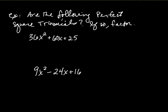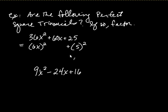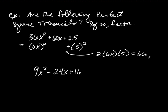First of all, are the following perfect square trinomials, and if so, factor? I recognize there's hope here because I have a perfect square on each end. What squared gives 36x squared? That's going to be 6x, squared. And what squared gives 25? That's going to be 5. The middle should be 2 times 6x times 5. And what's that equal to? Well, 2 times 5 is 10, times 6 is 60x. Indeed, I have 60x — so yes, it is a perfect square trinomial.